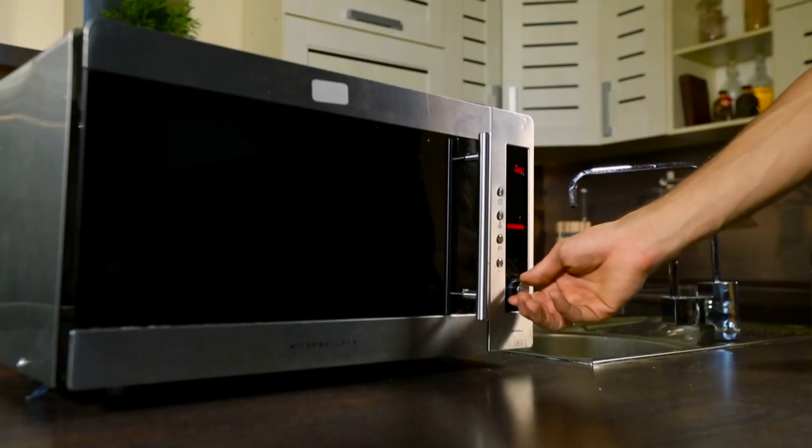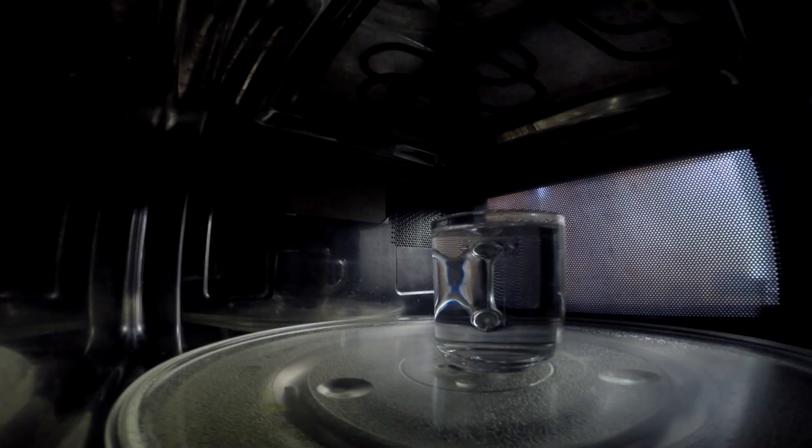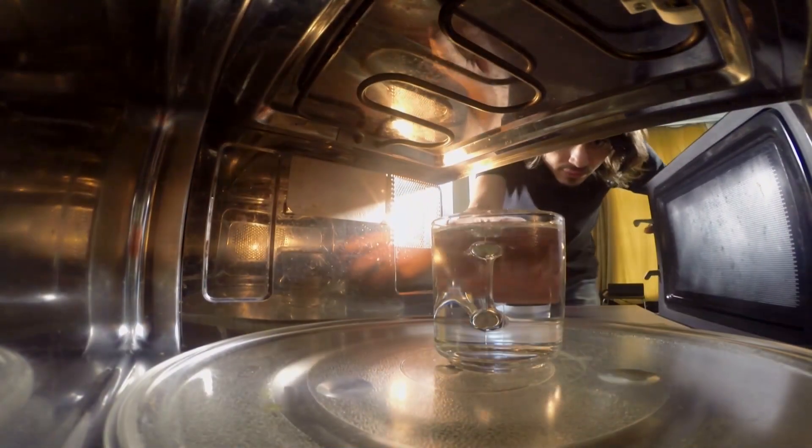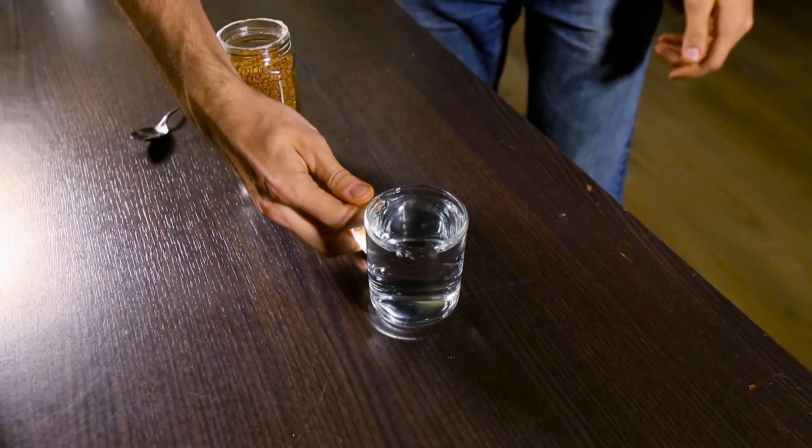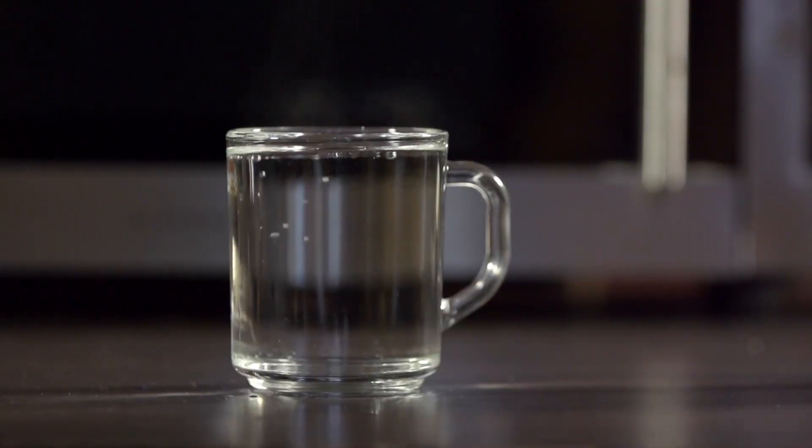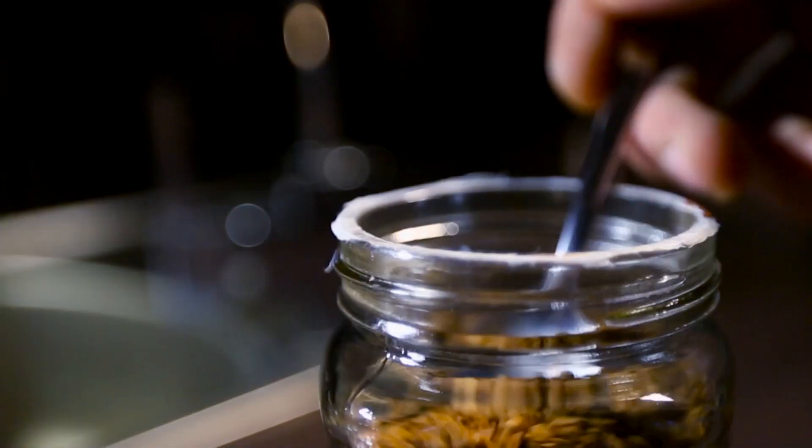We take a glass of distilled water and heat it in the microwave for five minutes at the maximum 800-watt power. It just looks like hot water, but if you put a spoonful of coffee or sugar in it...